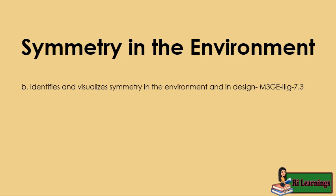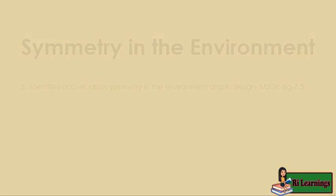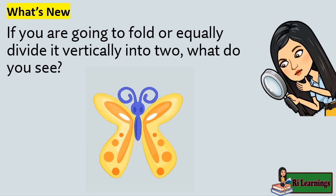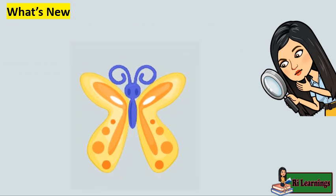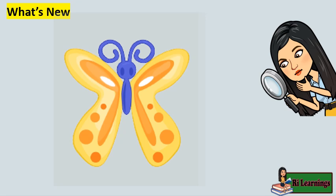Symmetry in the environment. In the picture is a butterfly. If you are going to fold or equally divide it vertically into two, what do you see? If we were to draw an imaginary line in the middle of it, we could divide it into two equal parts like this.